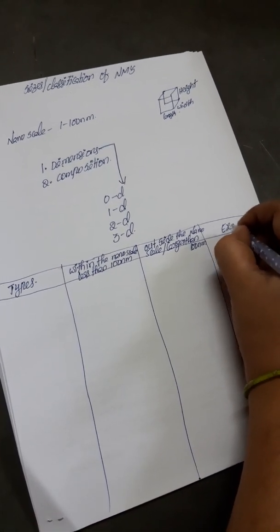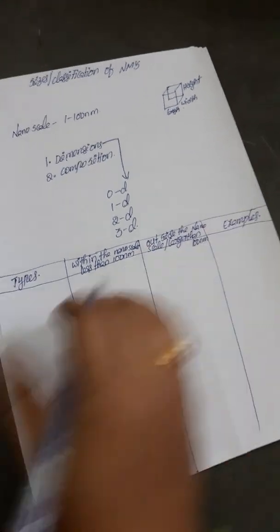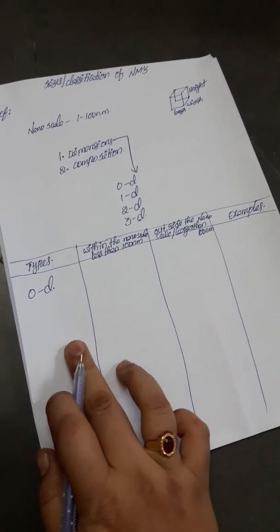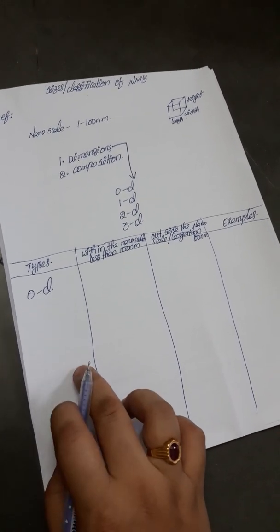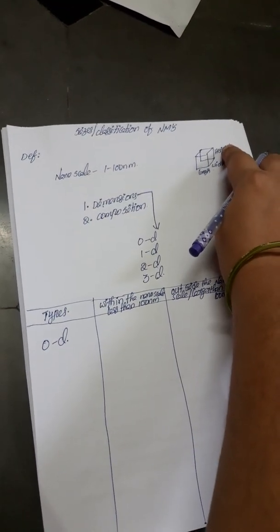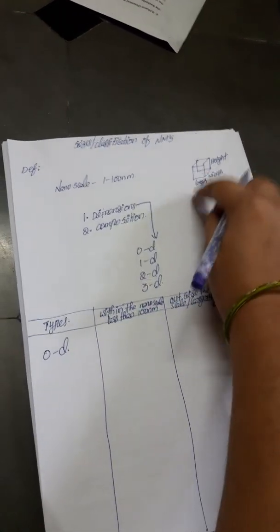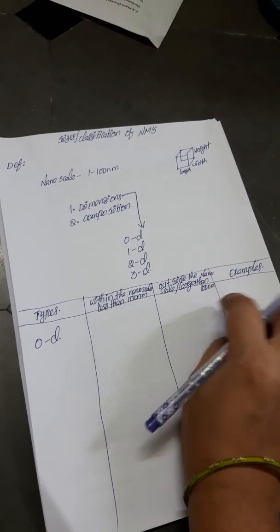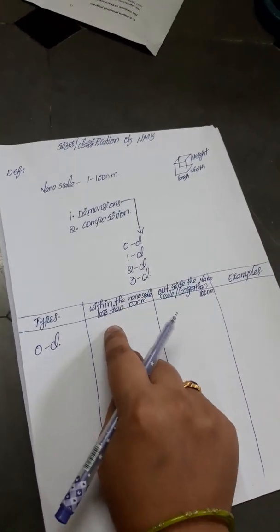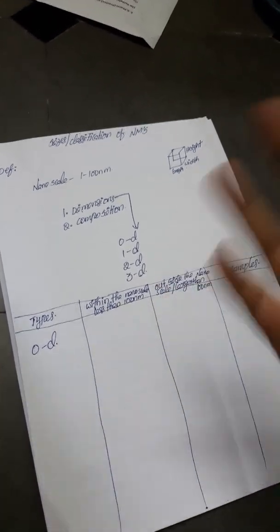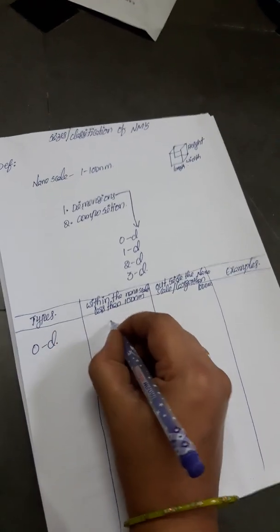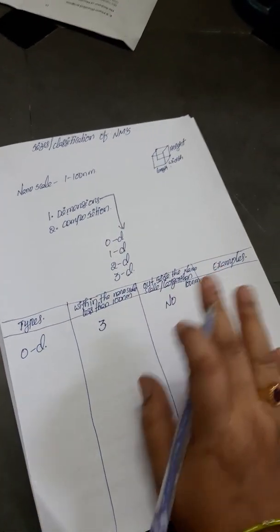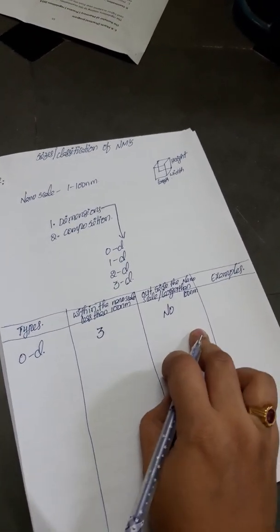First we will see zero dimensional nanomaterials. Zero dimensional nanomaterials are materials having all three dimensions within the nanoscale — all three dimensions are less than 100 nanometers and no dimension is outside the nanoscale or larger than 100 nanometers.